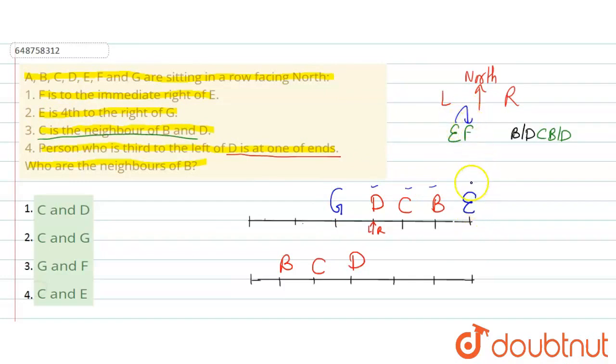Here comes E. So F should come in E's immediate right. Is there space in E's immediate right? No, so this becomes wrong. In this case, here comes G - G's first right, second right, third right, fourth right. So in G's fourth right comes E and in E's immediate right comes F. So here came F. Only one person remaining is A, so A comes here. This completes the arrangement.